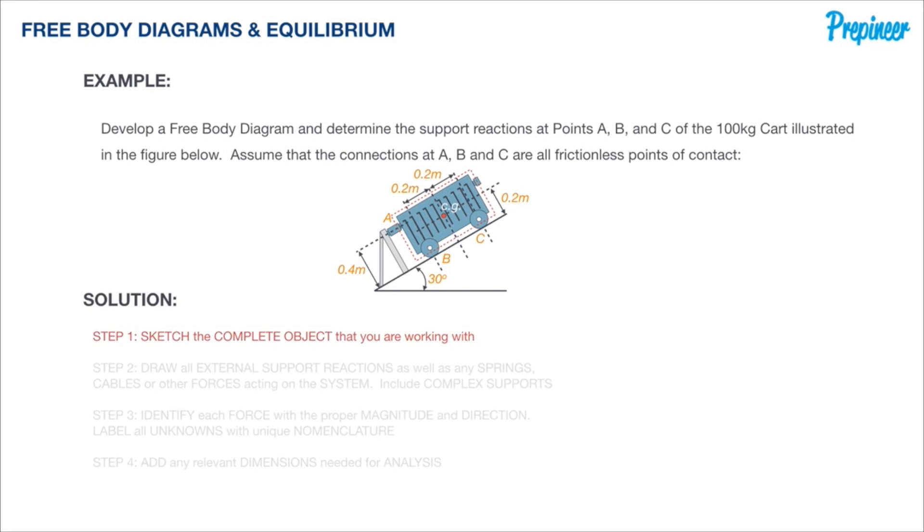Let's start with step number one: sketching the complete object. Our object of interest is the cart itself, so we can simply draw out that shape as depicted in the original figure. This is the starting point of our free body diagram and the object in which we want to confirm equilibrium for and solve for any unknown support reactions at A, B, and C.